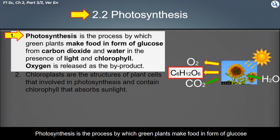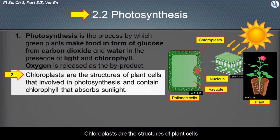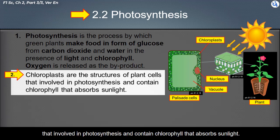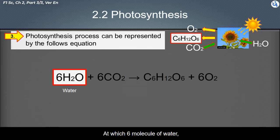Photosynthesis is the process by which green plants make food in the form of glucose from carbon dioxide and water, in the presence of light and chlorophyll. Oxygen is released as the byproduct. Chloroplasts are the structures of plant cells involved in photosynthesis and contain chlorophyll that absorbs sunlight. The photosynthesis process can be represented by the following equation.